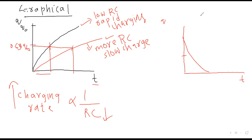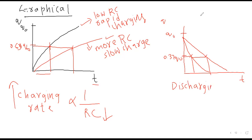Discharging graph میں: 0.37q₀ پر time constant ملتی ہے اور curve نیچے کی طرف آتا ہے۔ جس کا time constant کم ہو اس کی discharging rate زیادہ ہوگی — rapid discharging۔ جس کا time constant زیادہ ہو اس کی discharging rate کم ہوگی۔